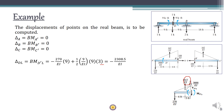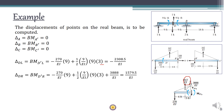The deflection just to the right of D includes the additional external moment M_D' (clockwise, hence positive), so: δ_D(right) = −2308.5/EI + 3888/EI = 1579.5/EI. This is the bending moment just to the right of D in the conjugate beam, which gives the deflection just to the right of D.